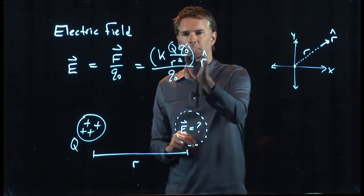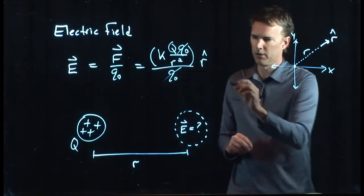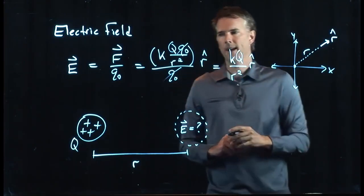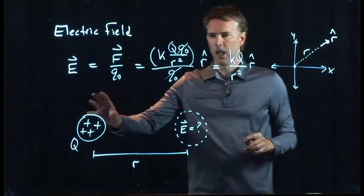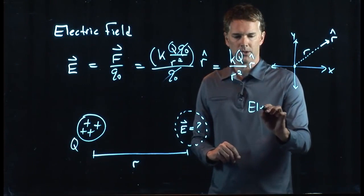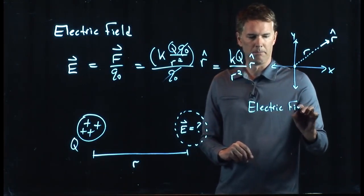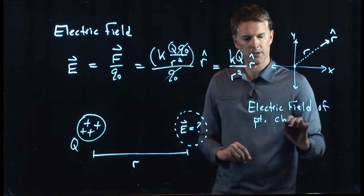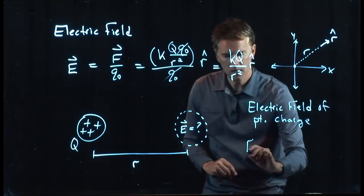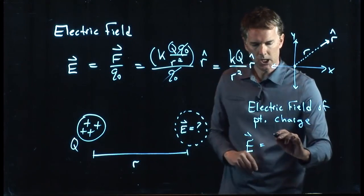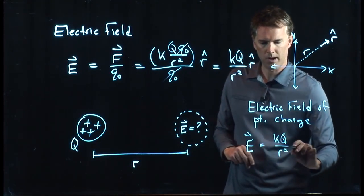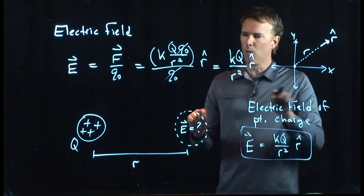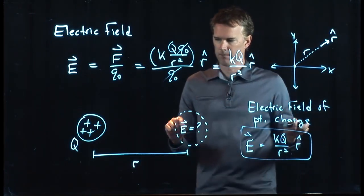Okay, we can cross out the Q-naughts right away. And so this whole thing simplifies to the following. KQ over R-squared R-hat. And this is the electric field of a point charge. And this is a good thing to just burn into your memory. Electric field of a point charge E is KQ over R-squared R-hat. That R-hat is just the direction. It means pointing away from the point charge.